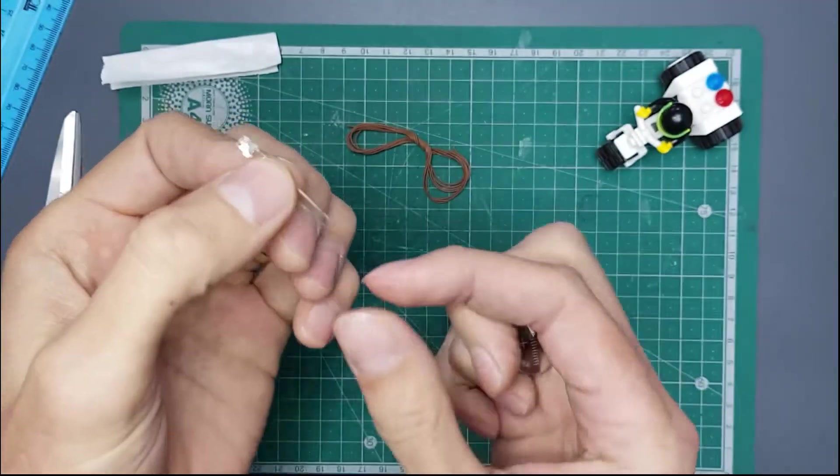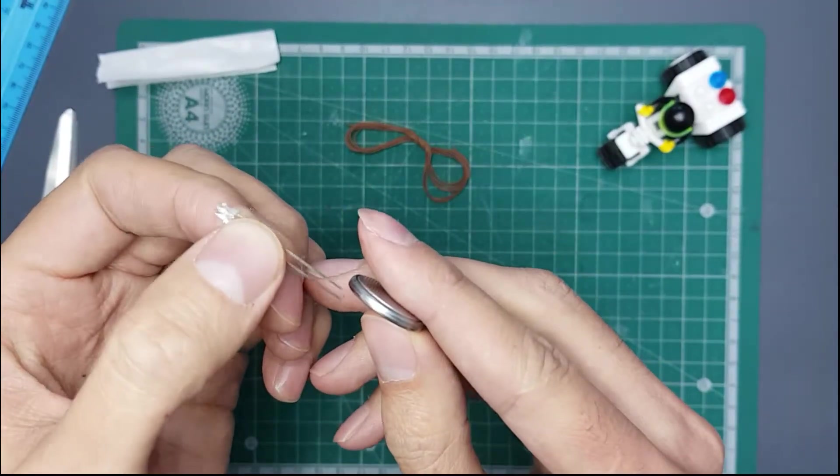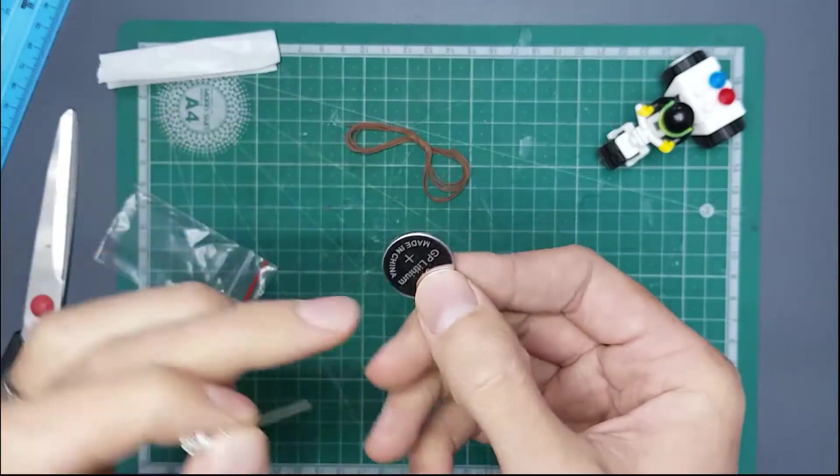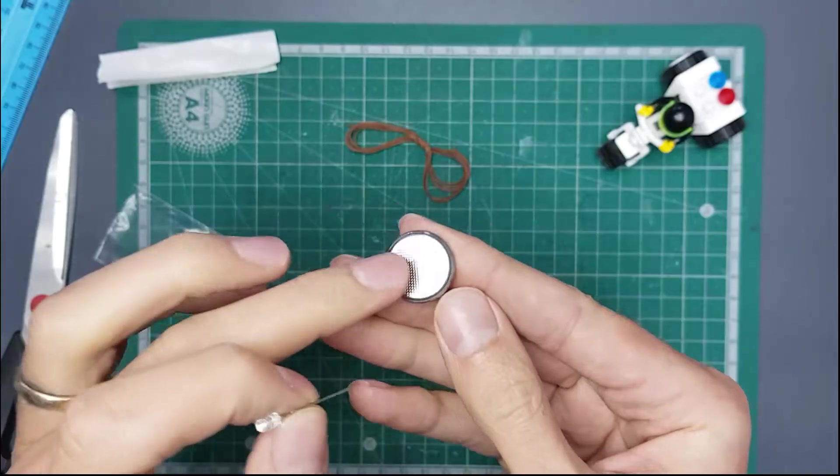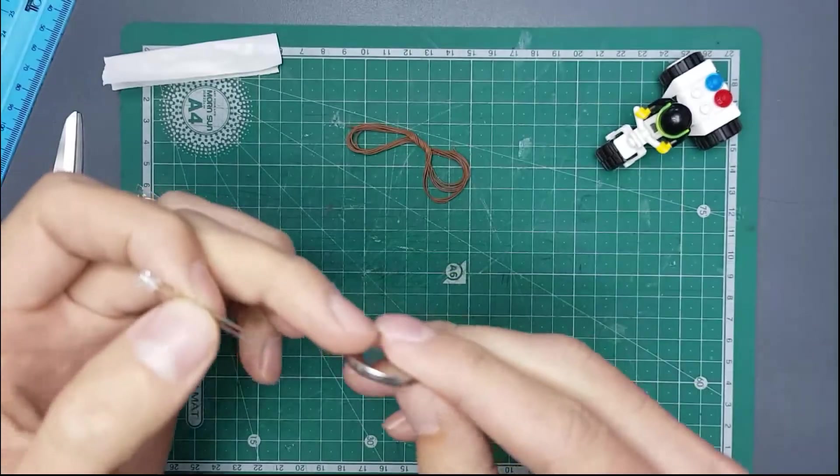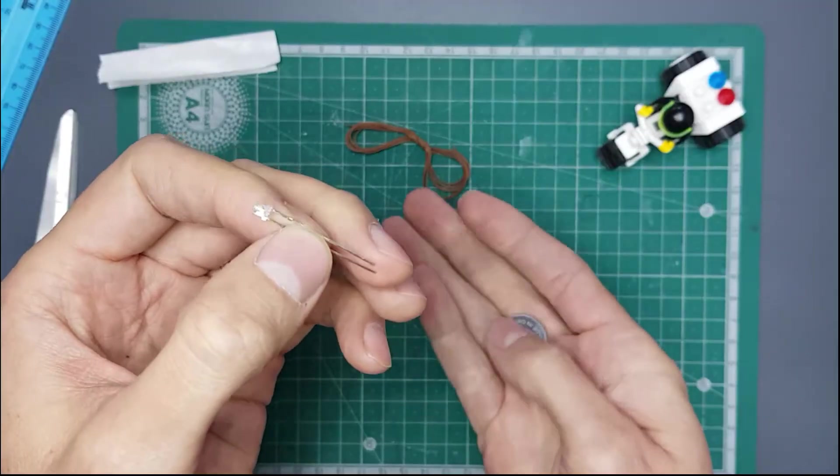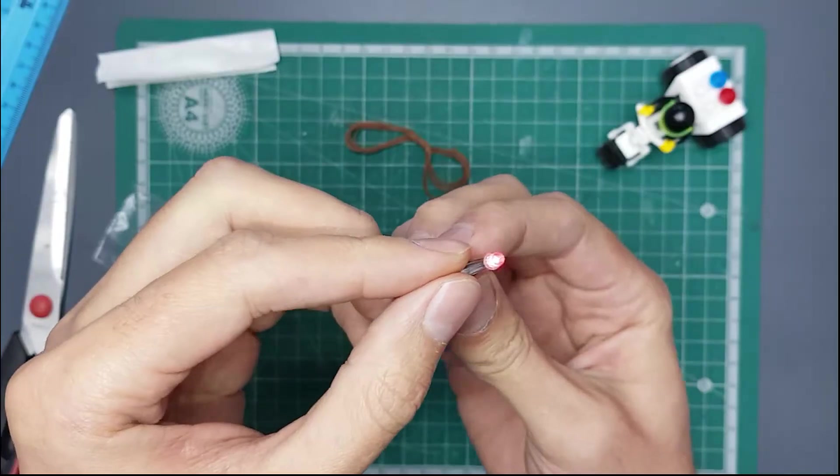The long leg is the positive. Polarized means it can only conduct electricity in one direction. This battery has a plus on this side, which means the other side is the minus. The long leg of our LED is positive, the short leg is negative. That's why when you connect it up like that, it turns the LED on.